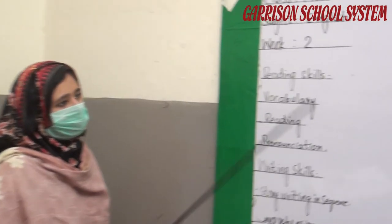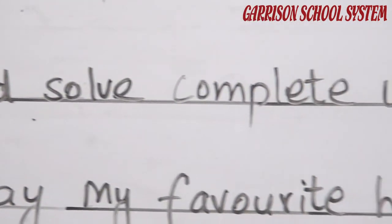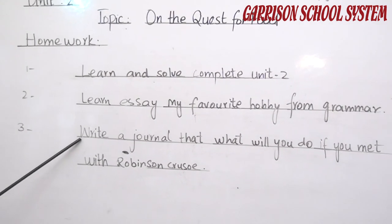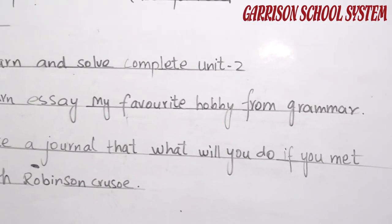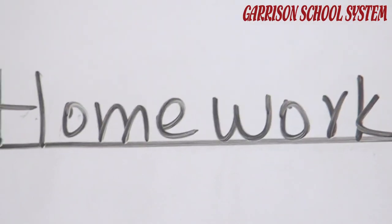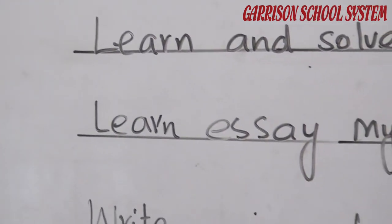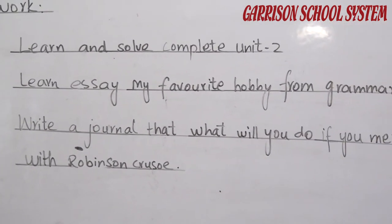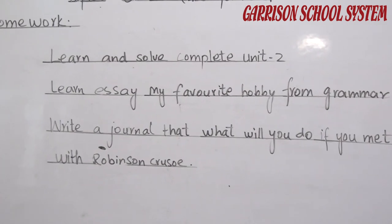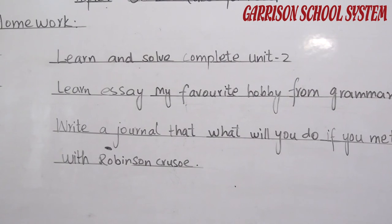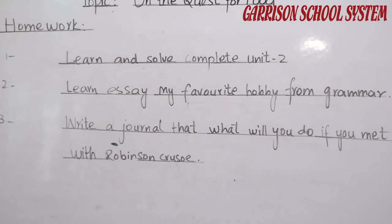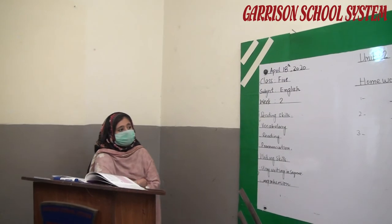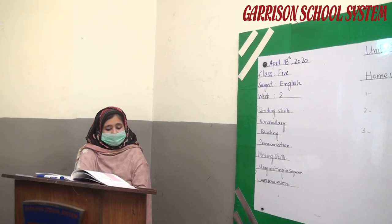So coming to the homework: learn and solve the complete unit number two; learn the essay 'My Favourite Hobby' from the grammar book; and write a journal about what you will do if you meet Robinson Crusoe. Now let's have a quick review of today's lecture. The prefix 'mis-' means wrongly and the prefix 'non-' means not — you have to make new words using these prefixes. We use the helping verbs will or shall to express intentions and determination. Also write words that have the short 'I' sound — make new words using the short 'I' sound. Note: your book mentions the long 'I' sound, but you have to make words using the short 'I' sound.